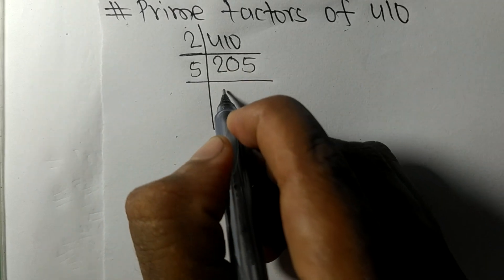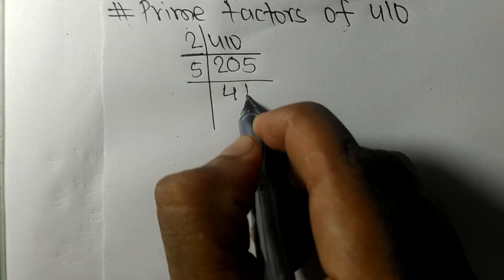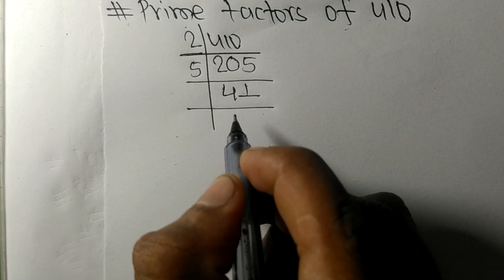By 5. 5 times 4 means 20, 5 times 1 means 5. Now we got 41.